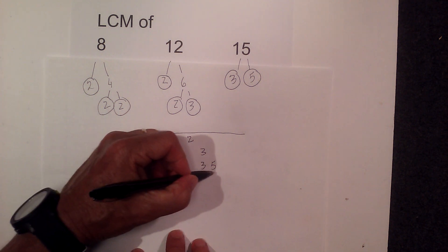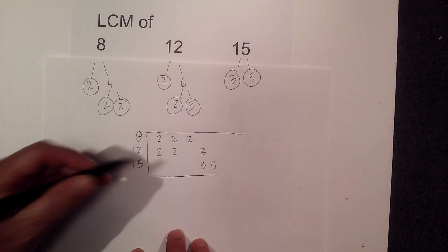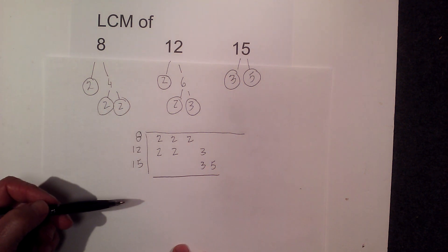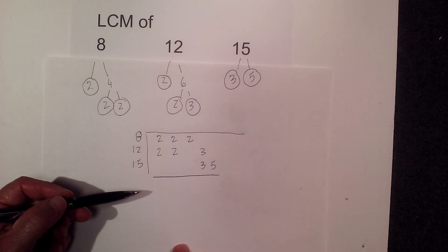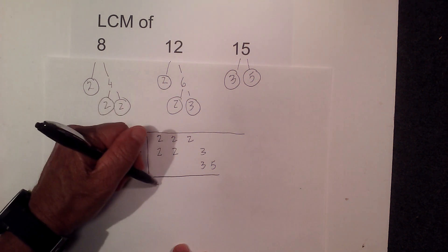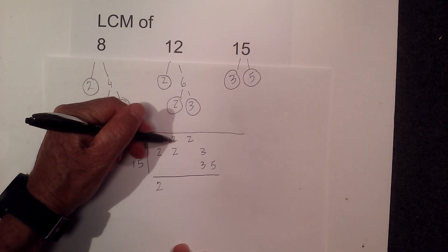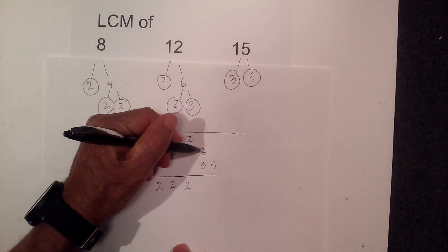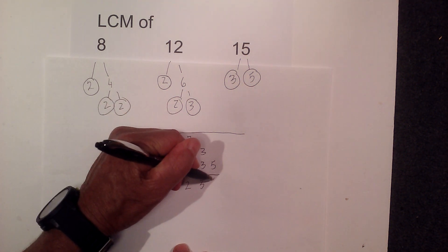Now what I do is if we have a vertical pair or even three numbers, then you only use the number once. So I'm going to bring down, I have a vertical pair so I'm going to bring down a 2, bring down a 2, bring down a 2, bring down 1, 3, and then a 5.